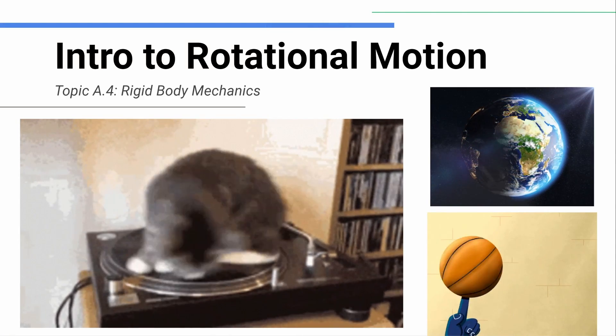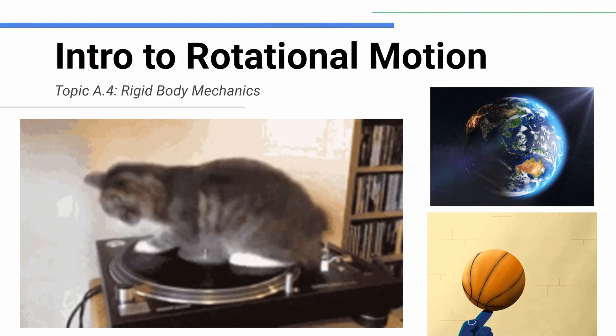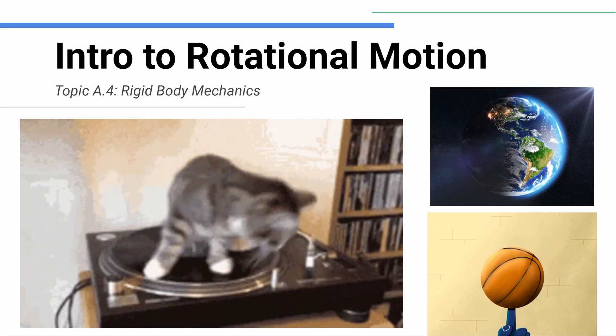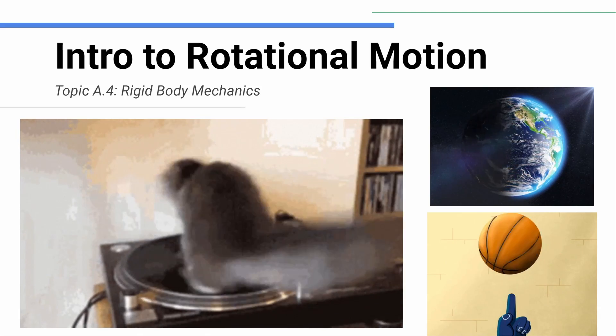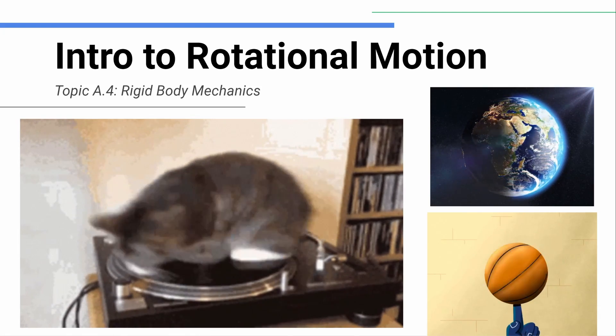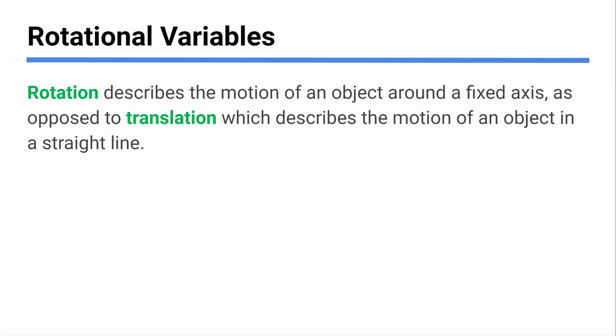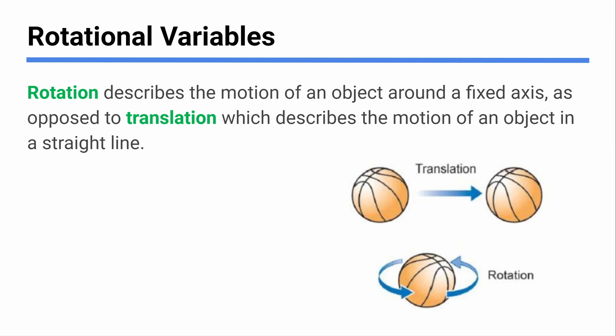In this video we're going to be talking about rotational motion and some of the variables we use to describe when something is rotating. This is the beginning of what the IB calls rigid body mechanics, the HL topic A4 in the data booklet. When we say rotation, we distinguish between two types of motion: rotation means something spinning around a fixed axis, and that's opposed to translation, which is something moving in a straight line.